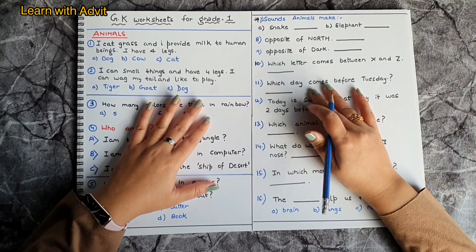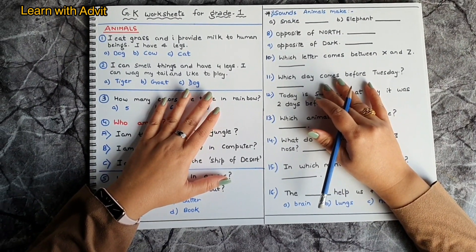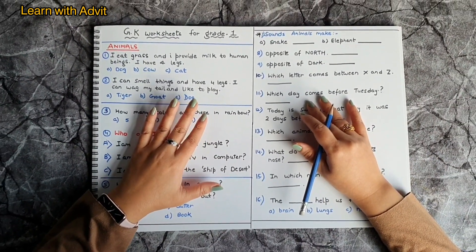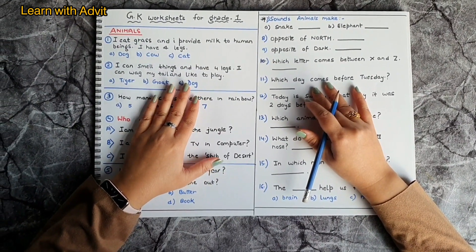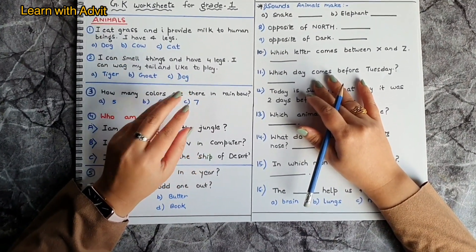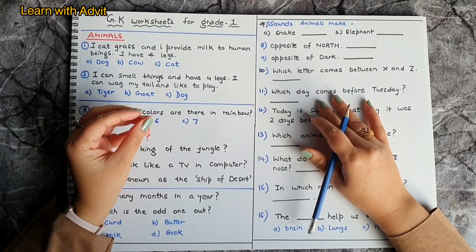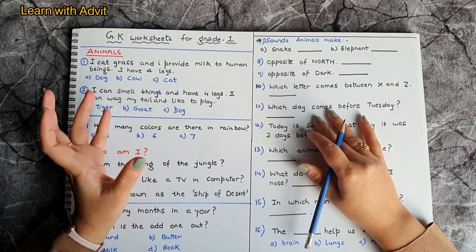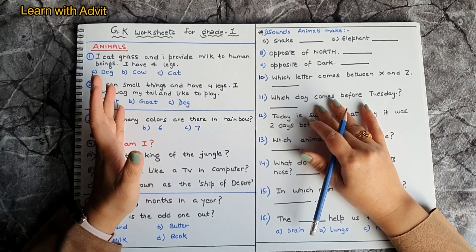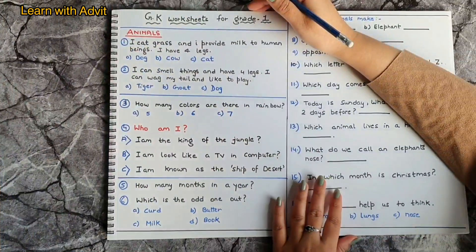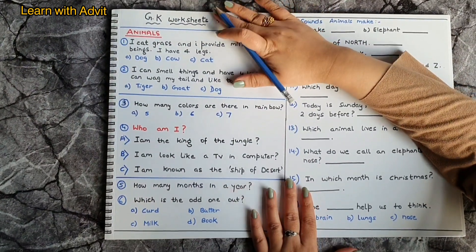Hi everyone, welcome back to our channel Learn with Advit. How are you all? I hope you all are doing great. Today's video is about Grade 1 GK and mental maths worksheet. I have created it in small question paper form. GK develops students' social, reasoning, and analytical thinking skills. So let's get started. Here are some GK questions.